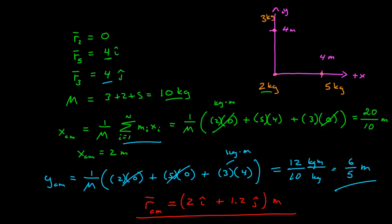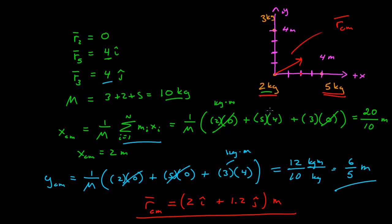Where is that on our system? Going back to our diagram, the center of mass has an x component of 2 and a y component of 1.2, so it sits about here. You can see it's not perfectly symmetrical between the objects — it's weighted towards the heavier mass. It also does not reach up to 4 meters, because it's weighted towards the origin where the 2 kg mass sits. It is the weighted sum of the positions of the various objects, weighted by their masses.